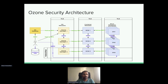You can see that the horizontal lines — which represent the left side — are covered by Kerberos and delegation tokens. Vertically, TLS protects all the HA services: inter-OzoneManager communication, intra-SCM communication, and intra-datanode communications.